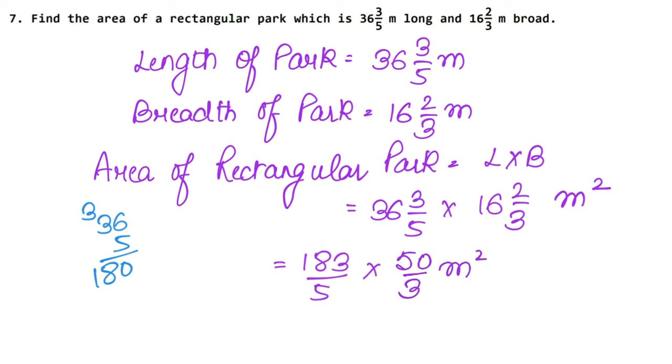Now, we will cancel it. 5 ones are 5, 5 tens are 50, and 3 ones are 3, 3 sixes are 18. So, how much will our answer be? 61 into 10, meter square. So, how much is it? 610 meter square. This is the answer for our area of the park.